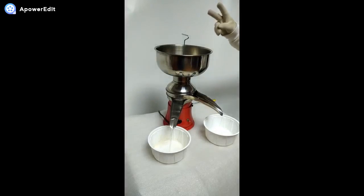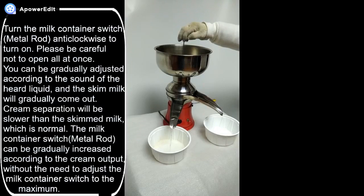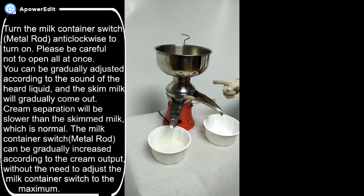Please be careful not to open all at once. You can gradually adjust according to the sound of the liquid, and the skim milk will gradually come out. Cream separation will be slower than the skim milk, which is normal. The milk container switch can be gradually increased according to cream output without needing to adjust to maximum.